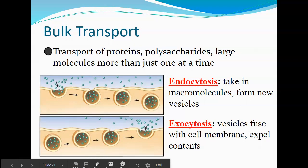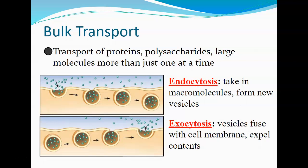Bulk transport handles large molecules — more than just one at a time. When the cell wants to bring in or get rid of a lot of things, endocytosis and exocytosis come in. Endocytosis buds things in, making new vesicles. Exocytosis is the exact opposite — proteins made from the endoplasmic reticulum, packaged by the Golgi into vesicles, make their way to the plasma membrane and are released.